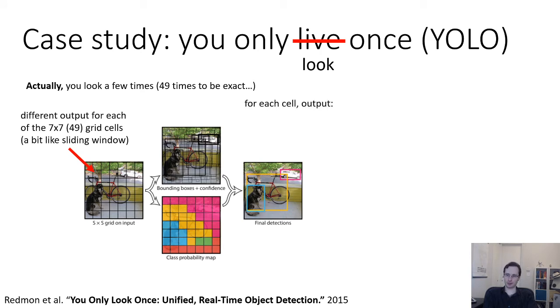And then for each cell, for each of those 49 cells, they output a bounding box location X, Y, W, and H. They output a confidence score, which you can roughly think of it as indicating whether an object is present or not. And formally, the confidence score is an estimate of the IOU, the intersection over union, with an actual real object. And they output the class label. And they don't output just one of these for every cell. They actually output B separate bounding boxes, IOUs, and class labels. In their implementation, they use B equals 2. So you can basically think of each grid cell as proposing two bounding boxes, each one with a class and a confidence.